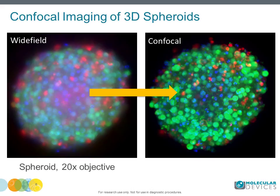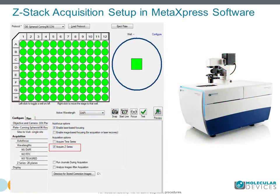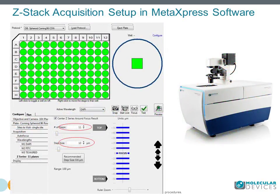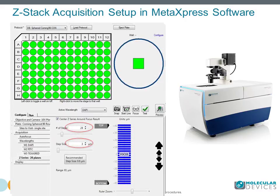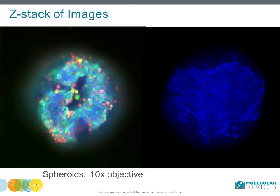Another challenge in performing a spheroid assay is the ability to image and analyze 3D objects. Common issues include difficulty of light penetration into the spheroid, scattering of light by cells, and background from out-of-plane fluorescence, which makes images blurry. Confocal microscopy provides efficient background rejection and gives sharper images. Images should be taken using automated confocal mode with a large field-of-view camera. MetaXpress software allows modification of the number of z-planes and distance between planes.